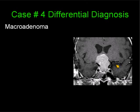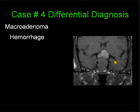We all know the differential diagnoses well. A macroadenoma may extend into the cavernous sinus and surround the vessels, like seen with a meningioma. However, a macroadenoma tends to narrow the vessels a little bit less often than an intrasellar meningioma. Statistically, an intrasellar meningioma is extremely rare when compared to a macroadenoma.